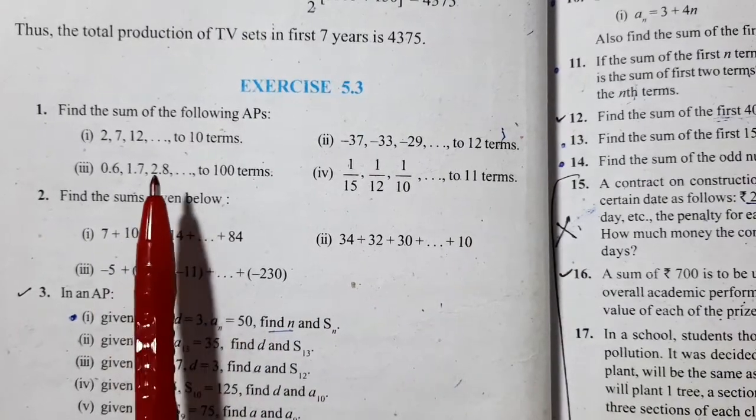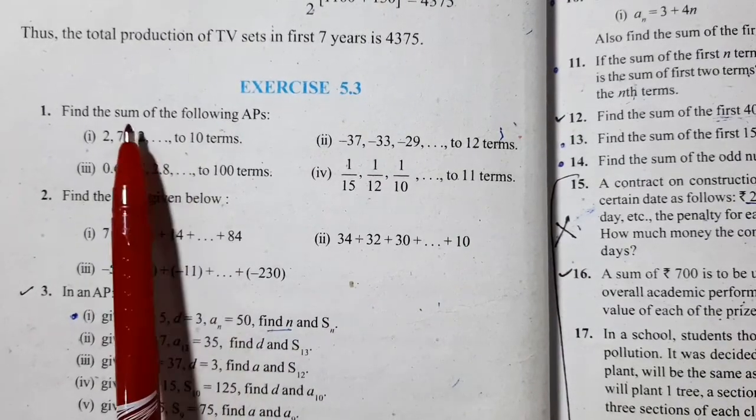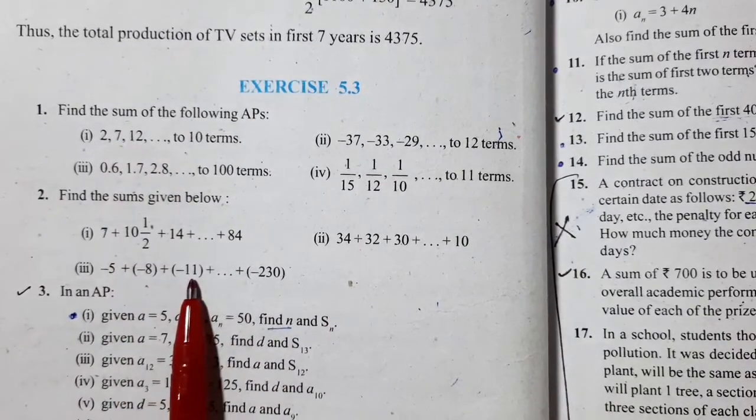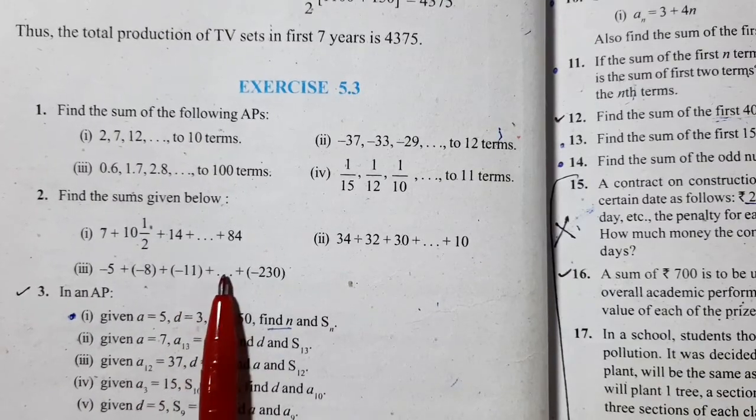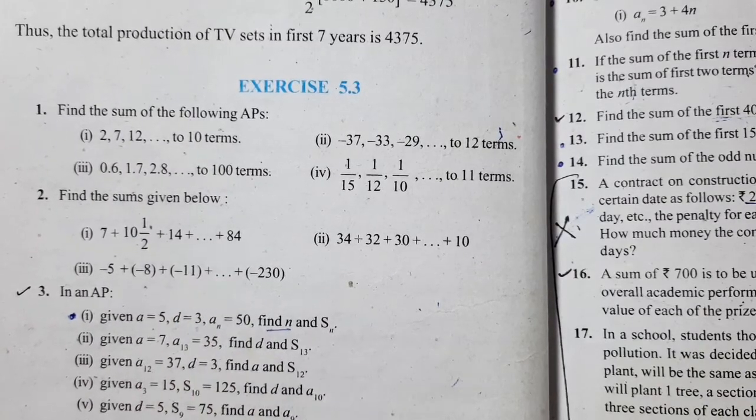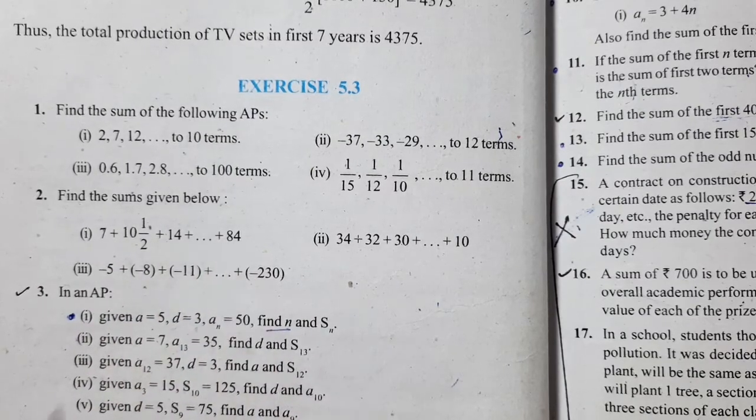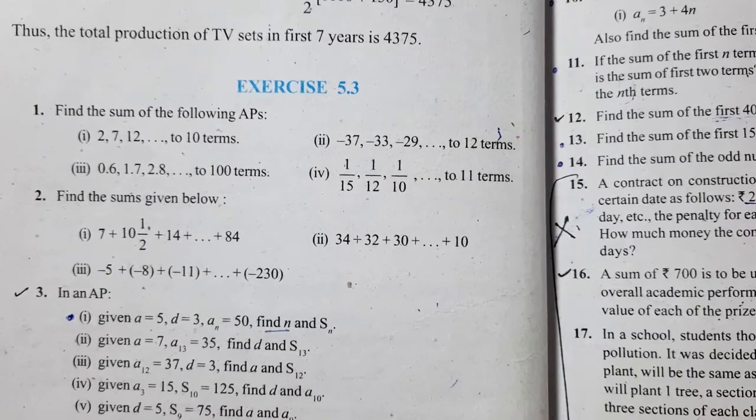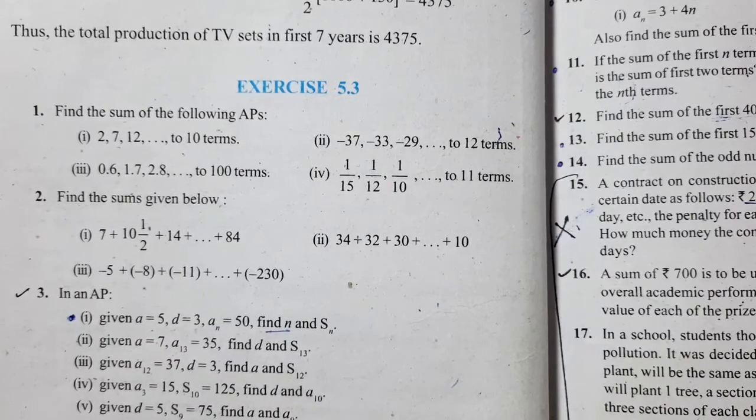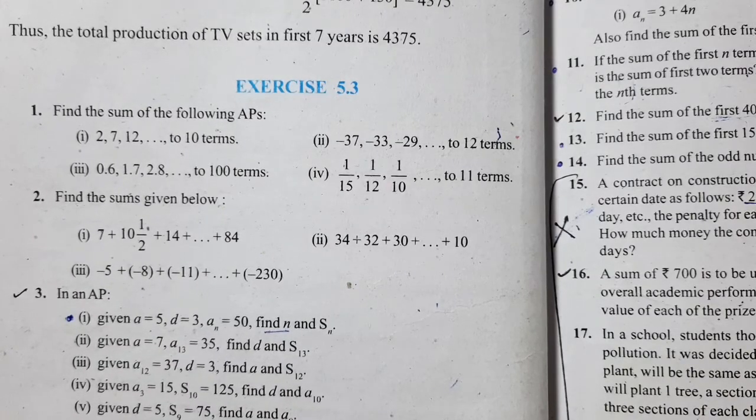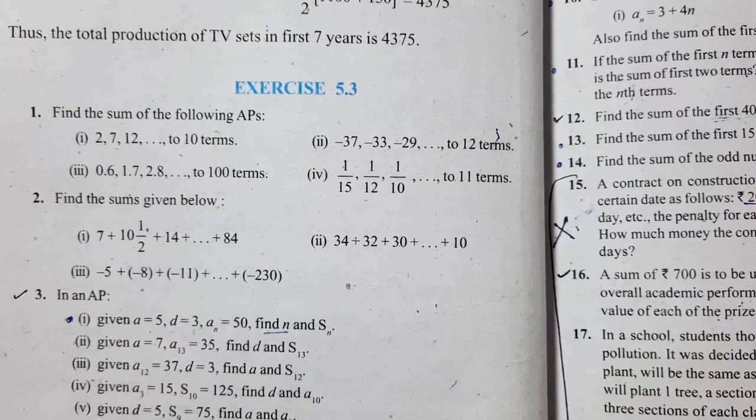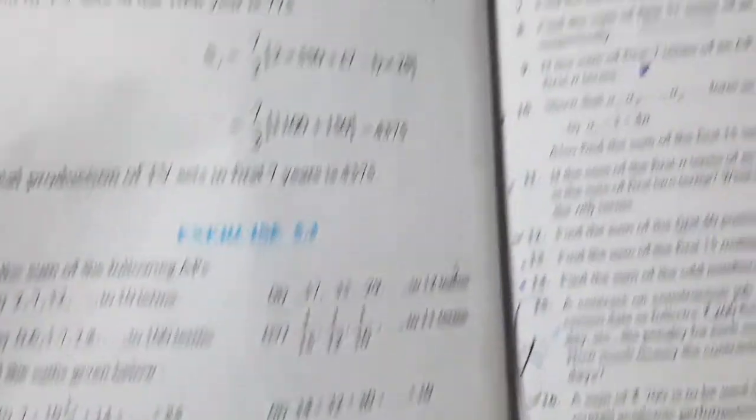In the previous question number 1, we found the sum of APs. But there the number of terms were given, so we could easily apply the formula. Here, we will do the same, but the number of terms is not known.